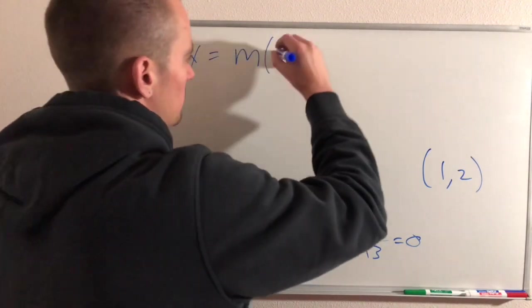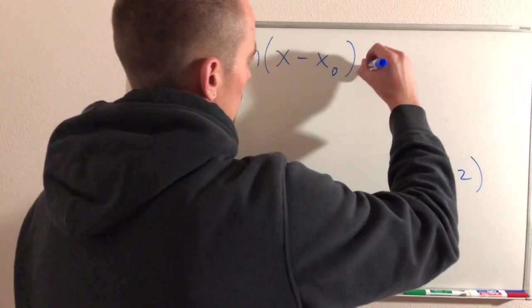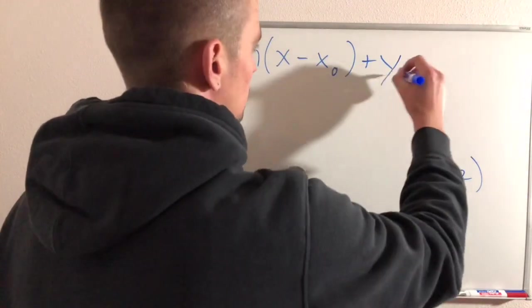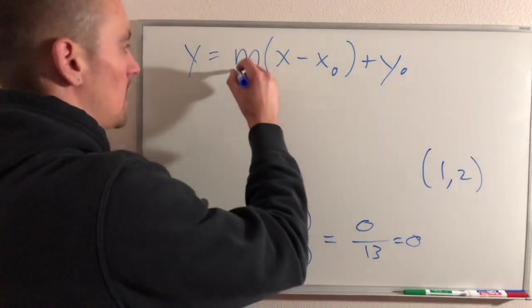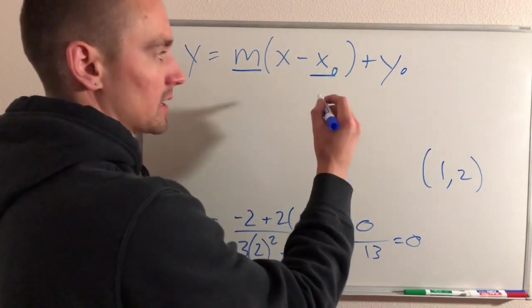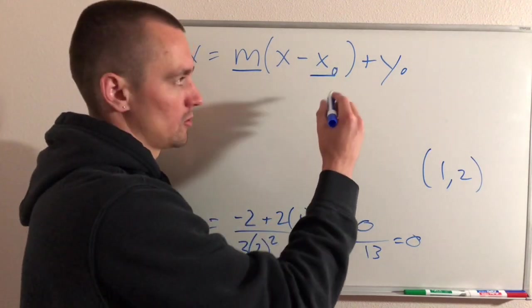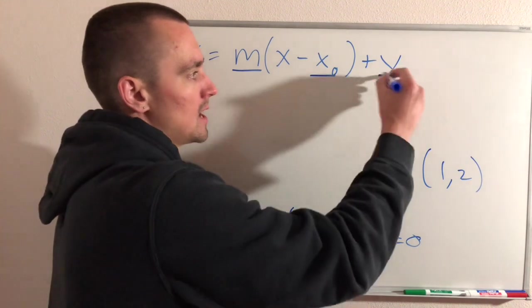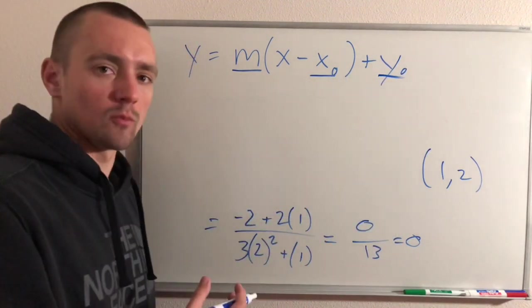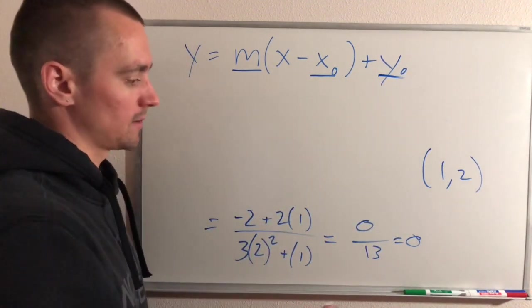y = m(x - x₀) + y₀. Where m is the slope, x₀ is the x-coordinate of a point that we know lies on this line, and y₀ is the y-coordinate of a point that we know lies on this line.